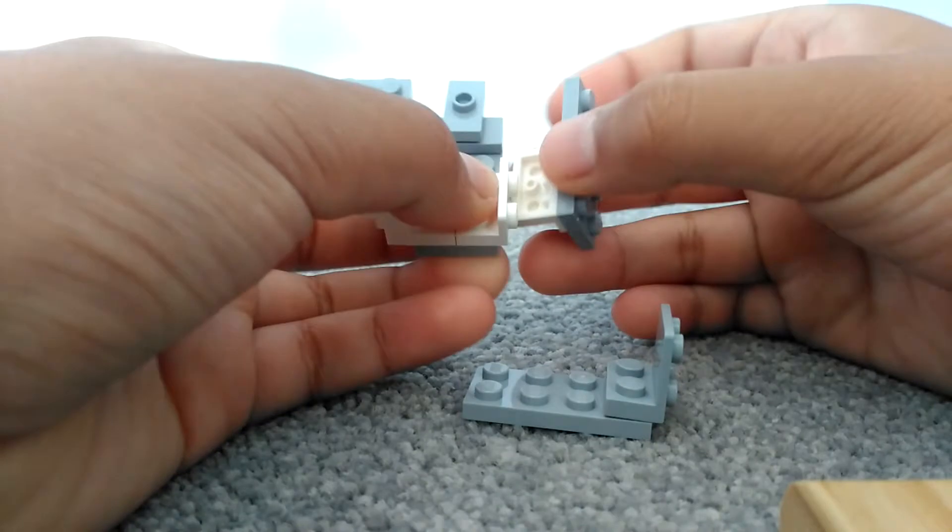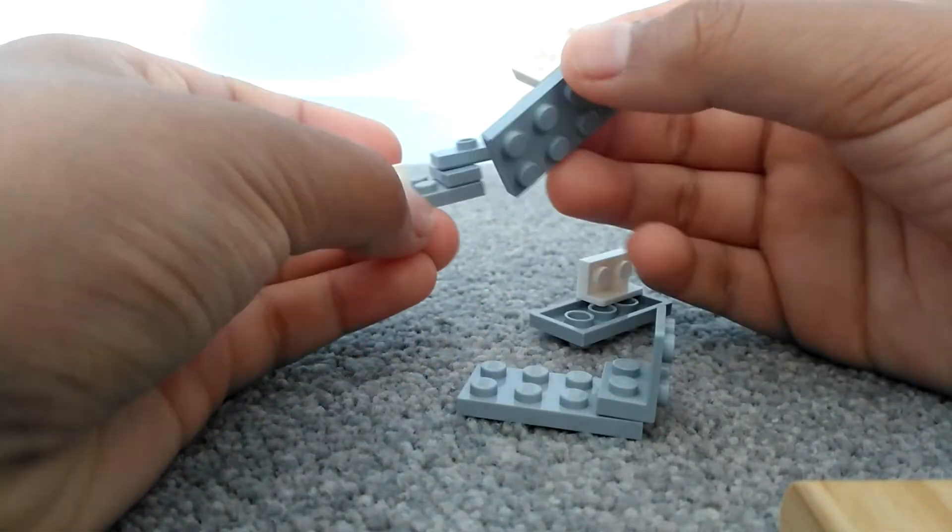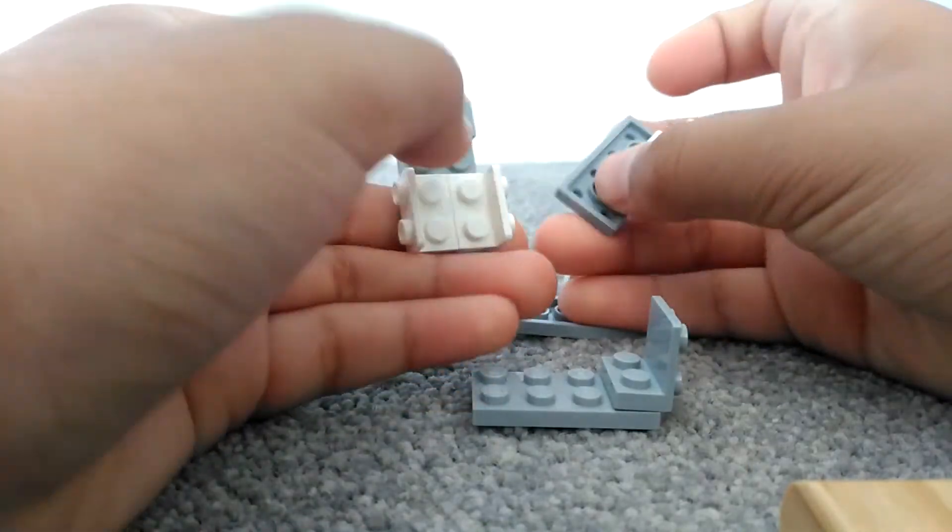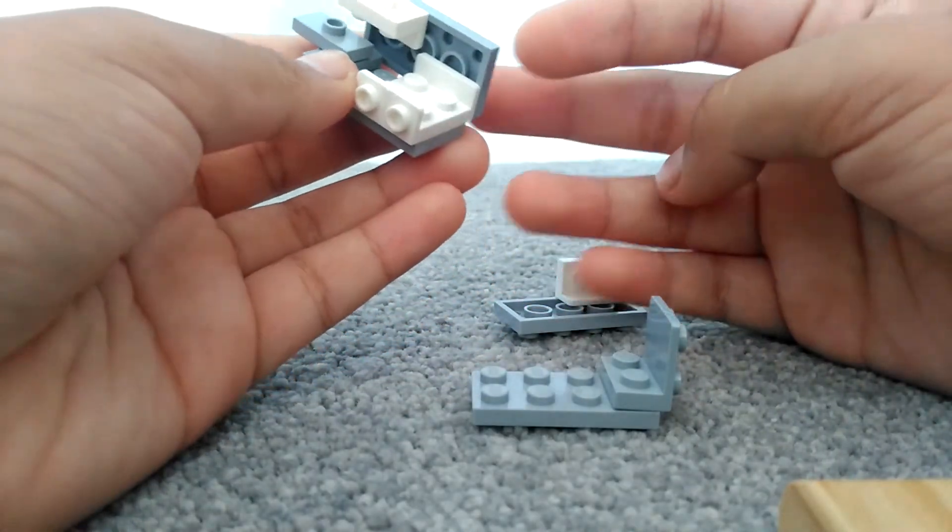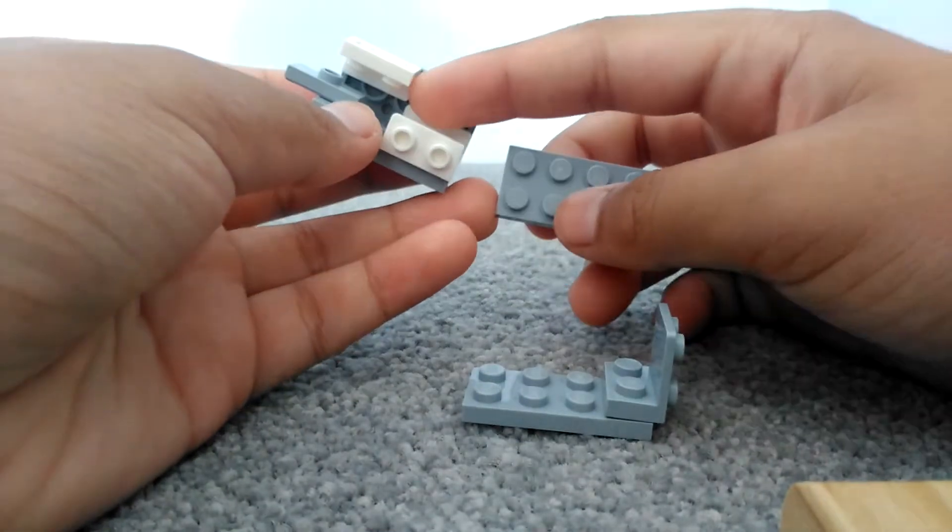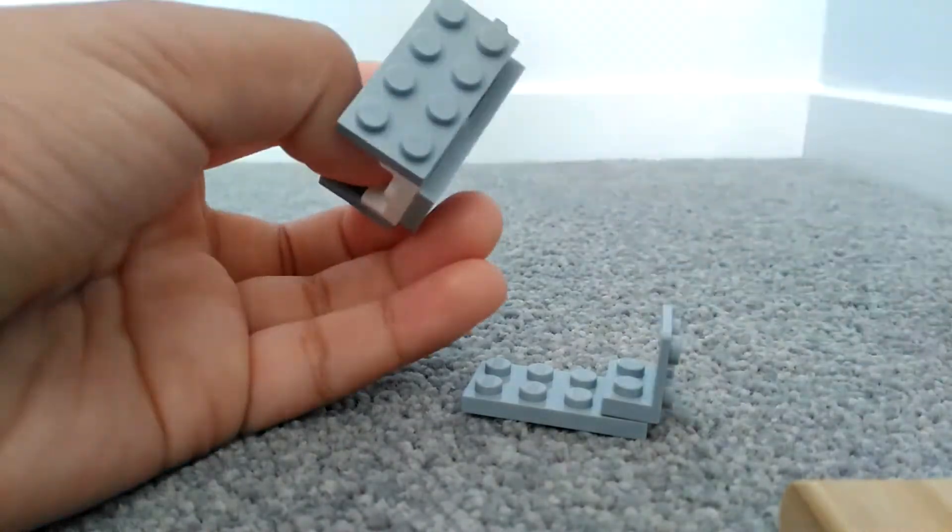Fold that out, then you're going to switch the panels. Make sure it's diagonal. Then you're going to do that with the other side.